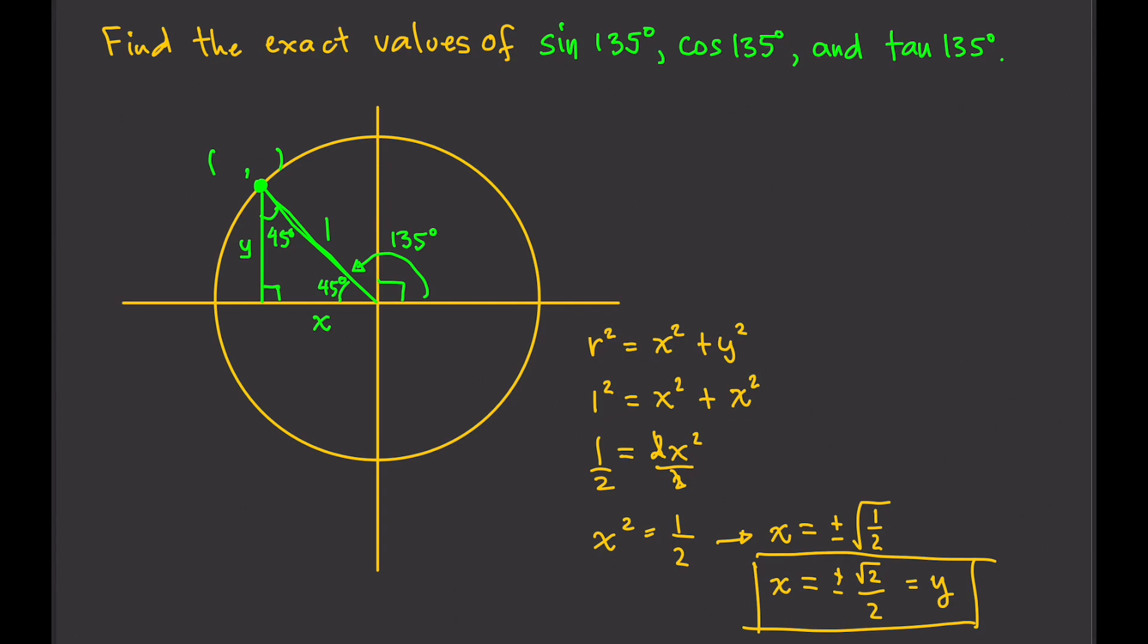So we have x and y. Now, we look at the quadrant that we are in. We are in the second quadrant. y is positive there. So we're going to take positive square root of 2 over 2 as our y value. And then for x, since we are in the second quadrant, x is negative there. So, therefore, x is negative square root of 2 over 2.